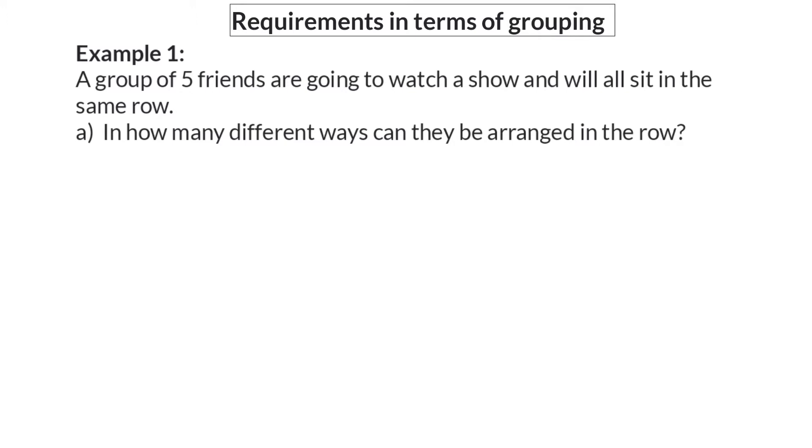A group of five friends are going to watch a show and will all sit in the same row. In how many different ways can they be arranged in the row?